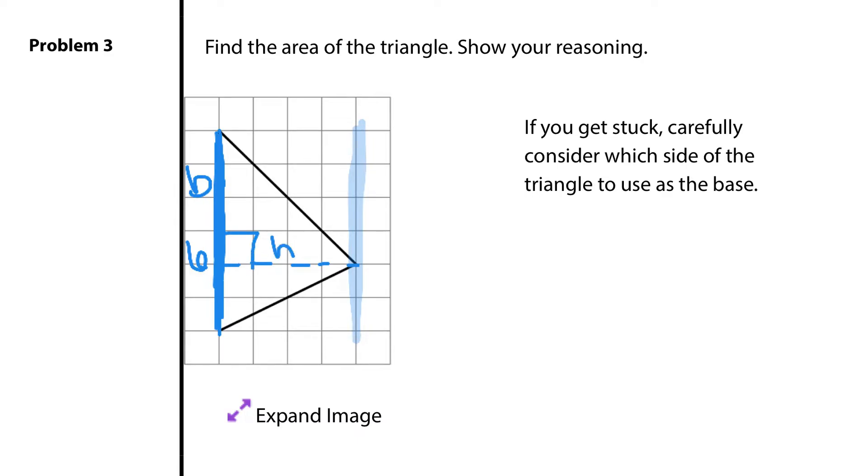Where this height is 1, 2, 3, 4 units. And if area equals base times height divided by 2. 6 times 4 divided by 2 is 24 divided by 2. Which will be 12 square units for the area of the triangle in question 3.